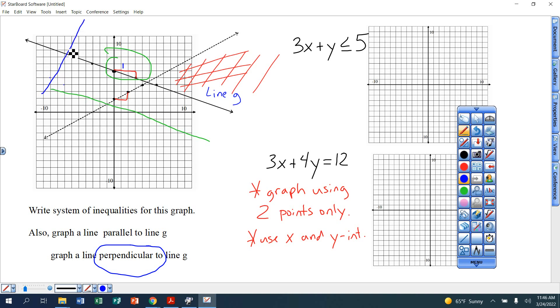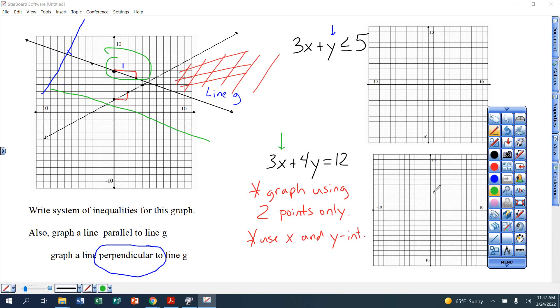And then the last one, solve this one for y, graph it, and then for this one do it using two points only. For the x-intercept, plug in zero right here for y, solve for x. For the y-intercept, plug in zero right here for x, solve for y. So this graph should have only two points on it when you graph it. Alright, the last word is hard, hard. Good luck. See you tomorrow, or see you Monday actually.